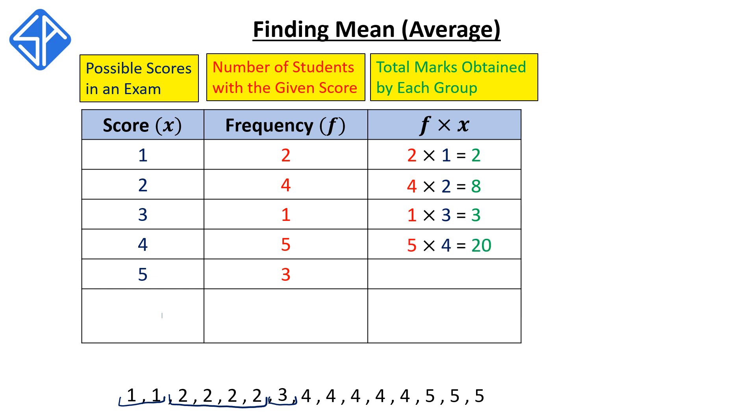5 times 4 is equal to 20. These 5 students with a score of 4 contribute a total mark of 20 to the class. And then lastly, 3 times 5 is 15. These last three students with a score of 5 contribute a total score of 15 to the class.